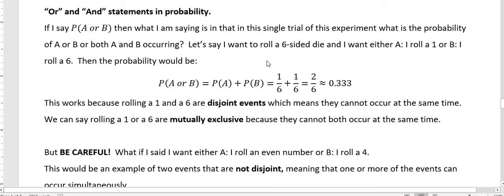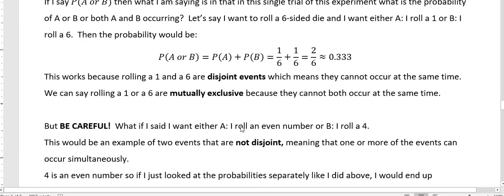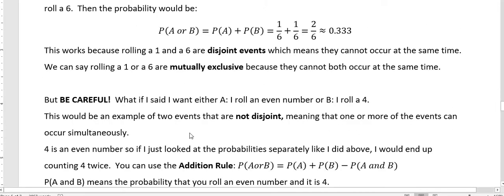So when you have mutually exclusive events or disjoint events, it's very easy to find the probability for an or statement. But be careful because what if I said my event A was I roll an even number and my event B was I roll a four. This would be an example of two events that are not disjoint because one of them can happen at the same time. One or more of them mean disjoint in general means that one or more of the events can occur simultaneously.